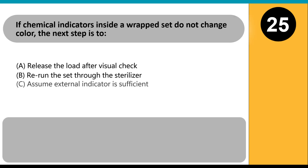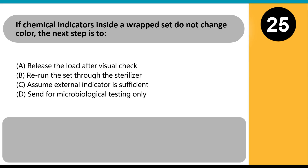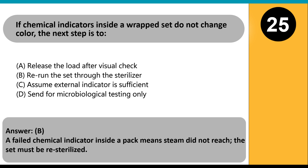If chemical indicators inside a wrapped set do not change color, the next step is to: A. Release the load after visual check. B. Rerun the set through the sterilizer. C. Assume external indicator is sufficient. D. Send for microbiological testing only. Answer: B. A failed chemical indicator inside a pack means steam did not reach; the set must be re-sterilized.